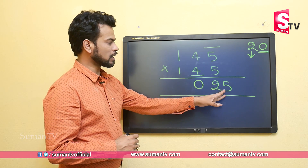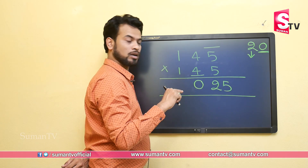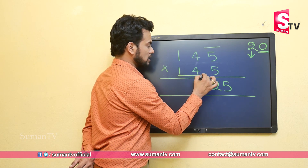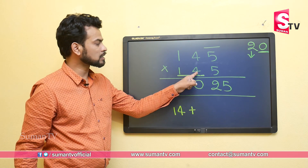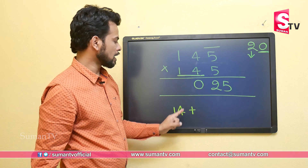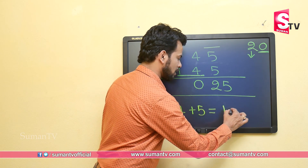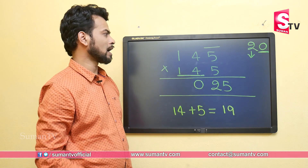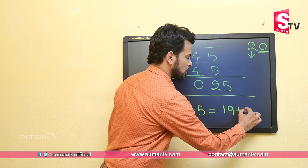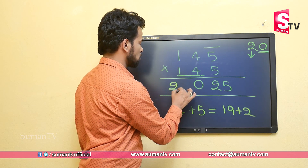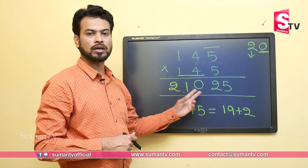Now for the third step of 145²: we take the tens and hundreds digits together — that is 14 — and add the successor of the tens digit, which is 5. So 14 plus 5 equals 19. But we have a carryover of 2, so 19 plus 2 equals 21. The final answer for 145 squared is 21025.